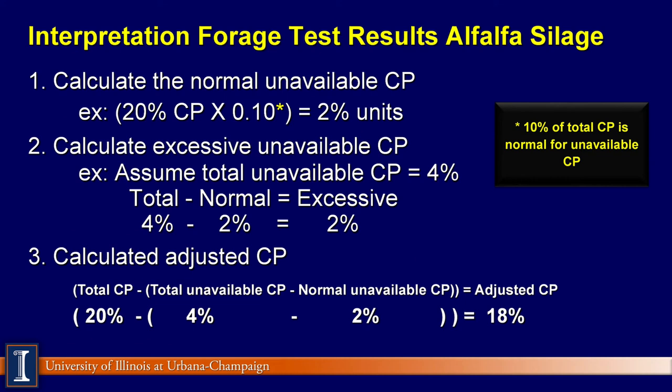For example, to calculate the adjusted crude protein in alfalfa silage, first calculate the normal amount of unavailable crude protein. Multiply the crude protein content of the alfalfa silage — determined to be 20% — by 0.1, because the normal amount of unavailable crude protein in forage is 10% of the total crude protein. This indicates that 2% units of the crude protein in this alfalfa is normal unavailable crude protein.